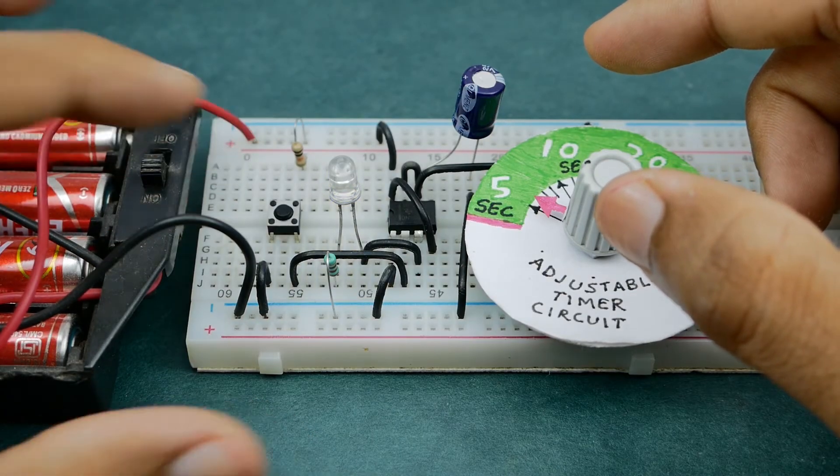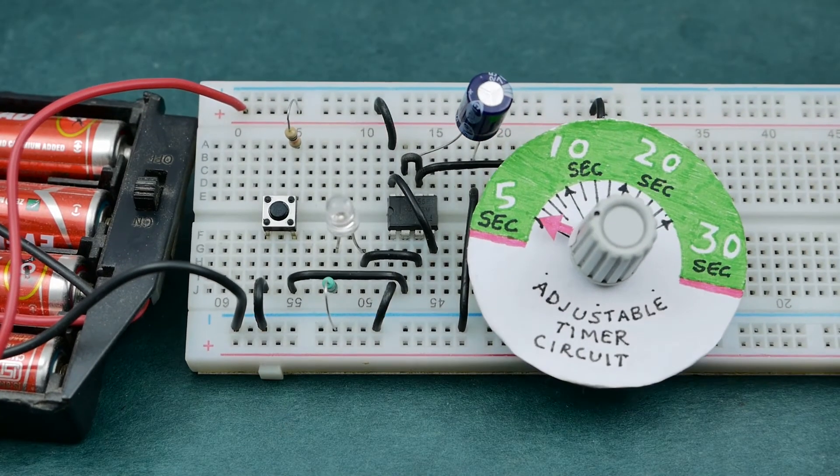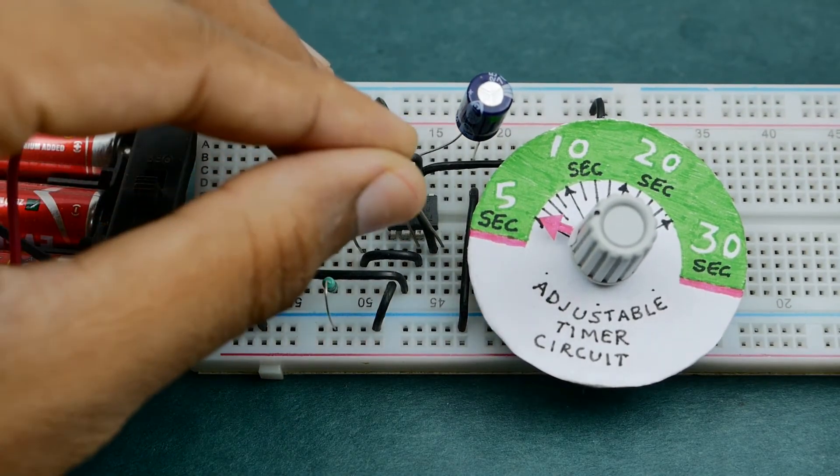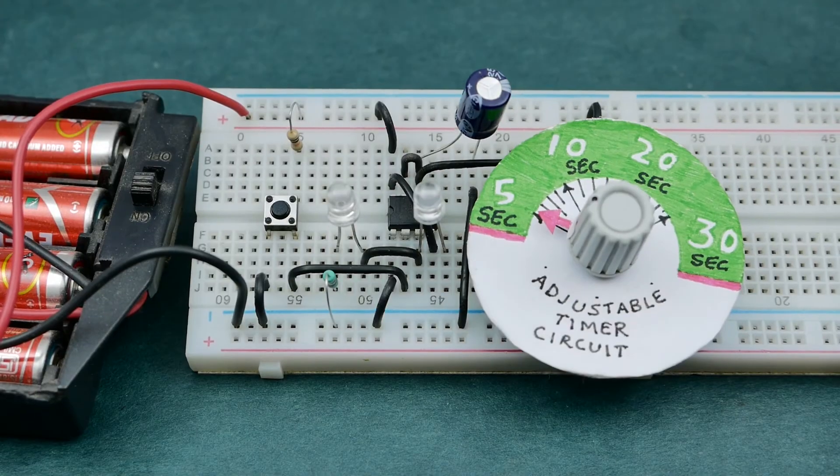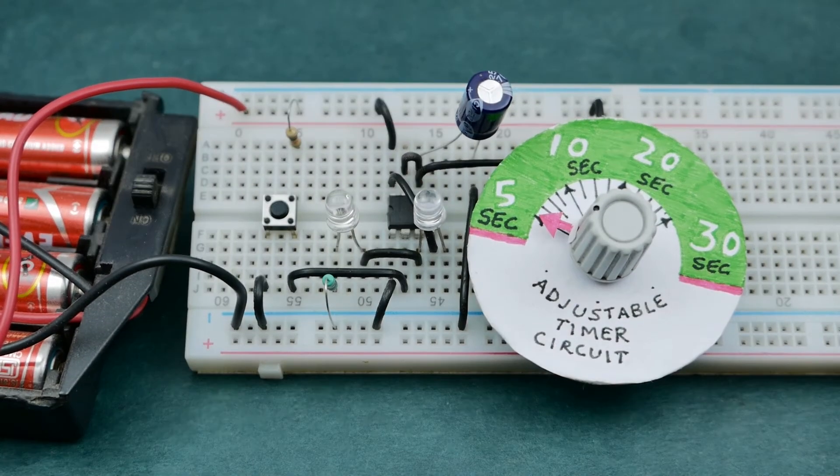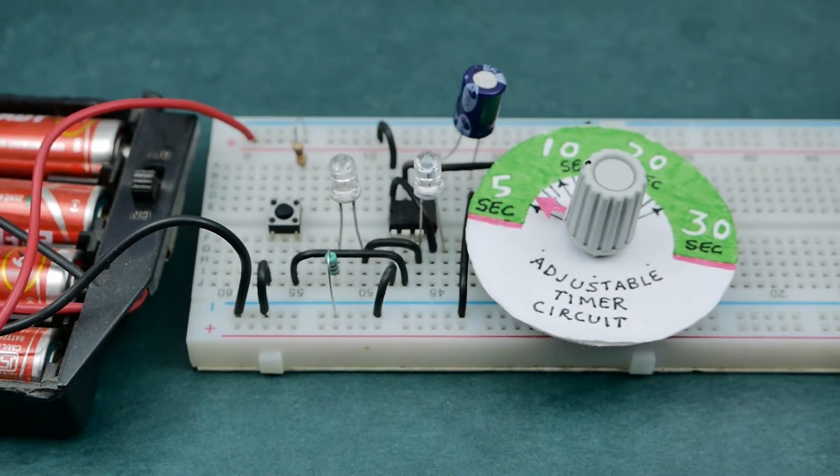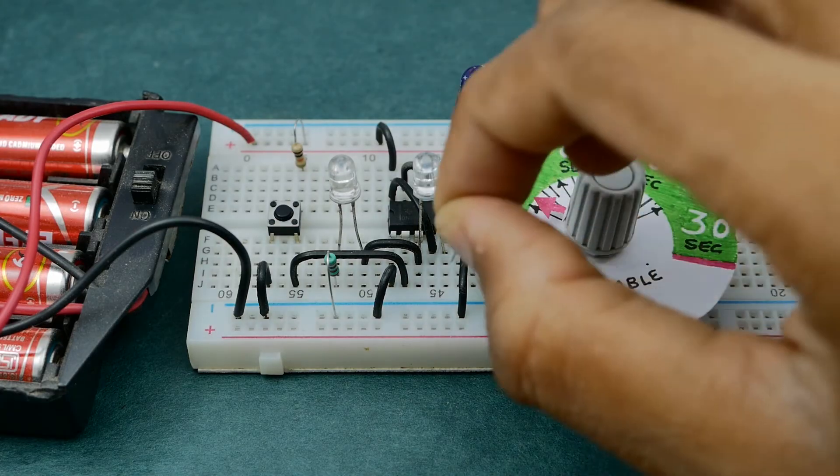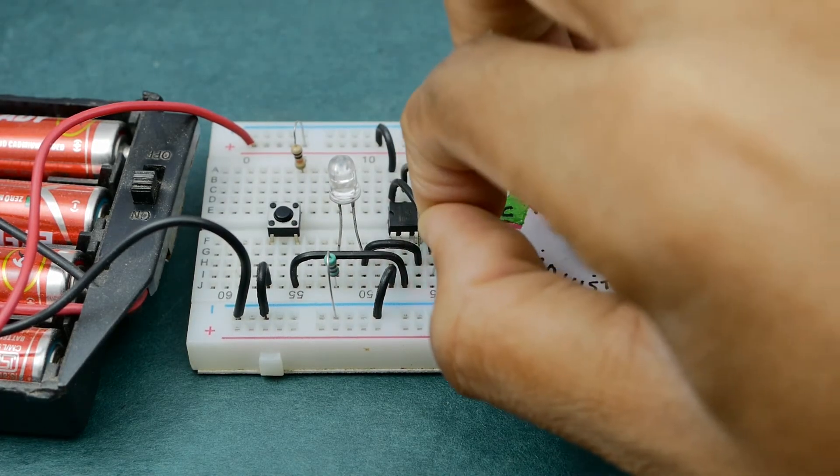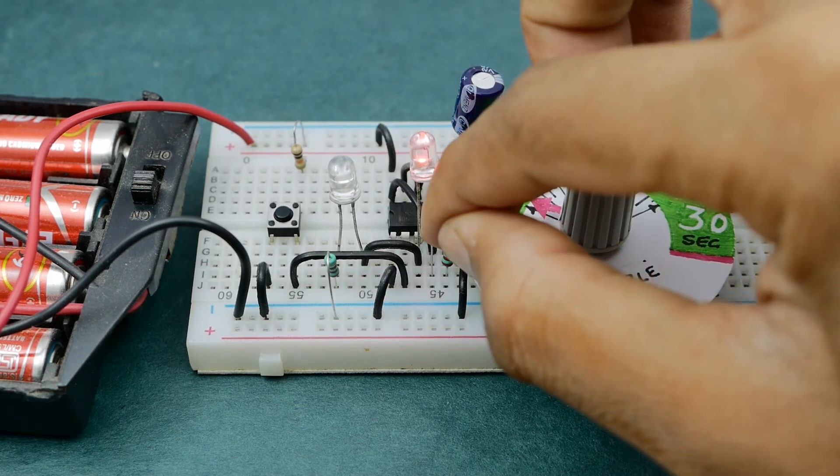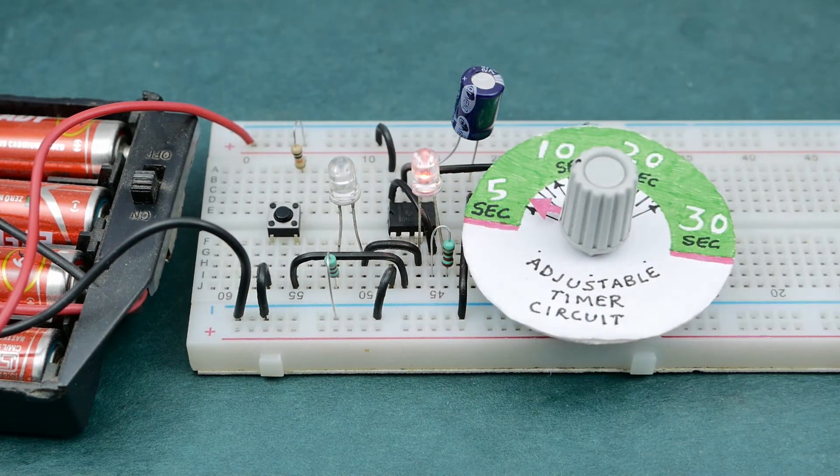For turning ON the output after the delay time has elapsed, we need to connect the negative terminal of the output to the output pin of 555 timer IC and the positive terminal to positive rail. And since pin 4 is already connected to positive rail via pin 8, I have connected this LED's other terminal to pin 4 via the series resistor.